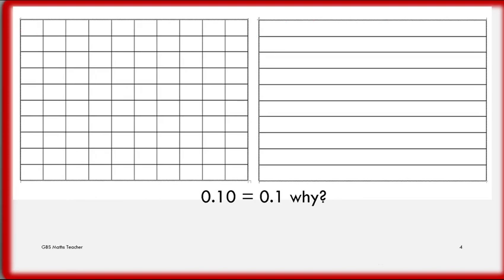Now in the second phase, we will discuss why 0.10 equals 0.1. These two frames are equal — they occupy equal space. The first frame is divided into 100 parts and the second is divided into 10 equal parts. Now, what do 0.10 and 0.1 mean? First I will convert both into fractions. 0.10 is 10 over 100, because there are two decimal places. So 10 over 100 represents 0.10. And the second one is 1 over 10. Now we have to prove they are equal.